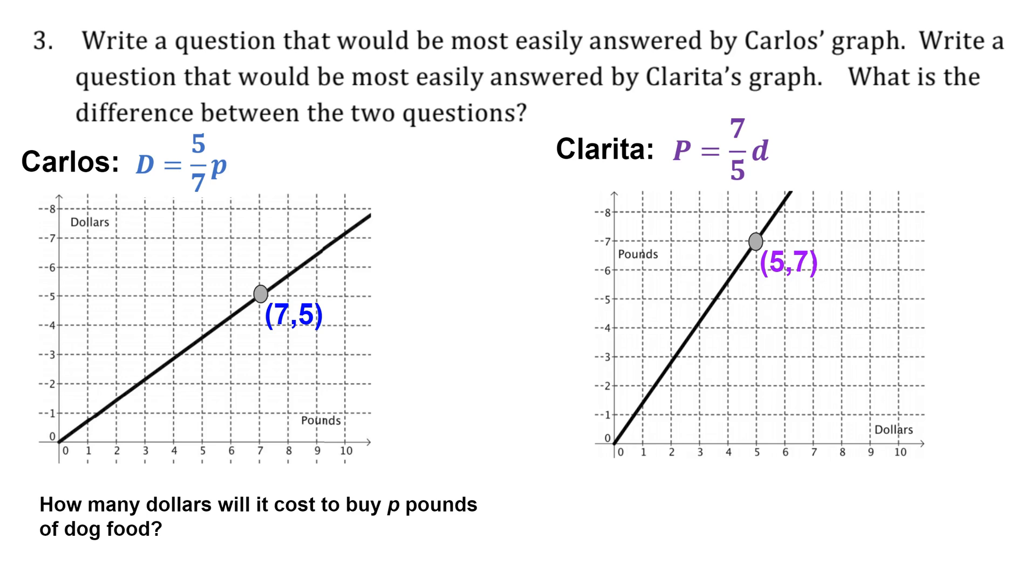It also asks us to write a question that could be most easily answered by Clarita's graph. Her questions would be of the form: How many pounds of food can be purchased for D dollars? Because in her scenario the pounds depend on the dollars. So the difference is in Carlos's case dollars depends on pounds and in Clarita's case pounds depends on dollars. They represented the same piece of information in different ways.